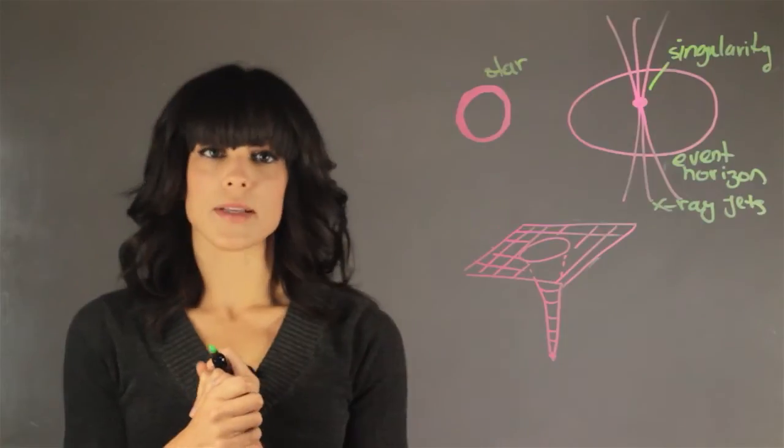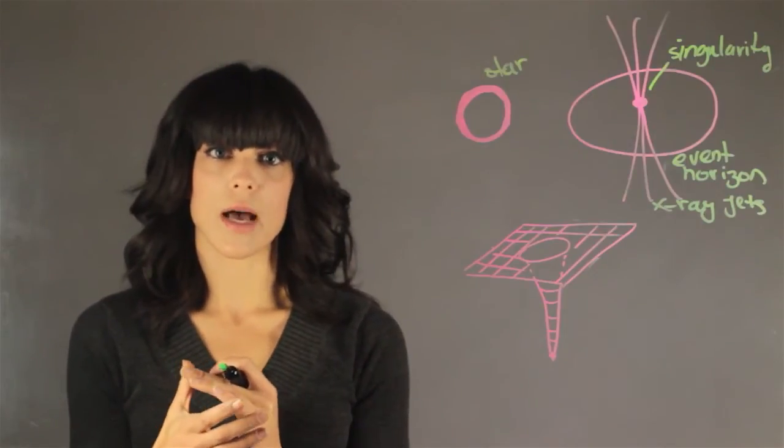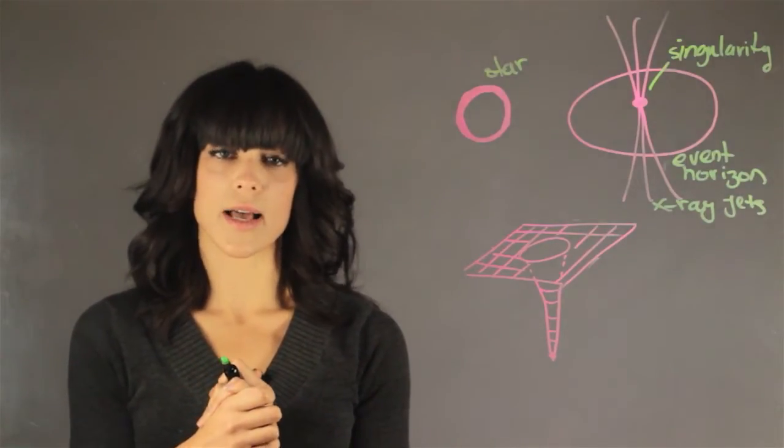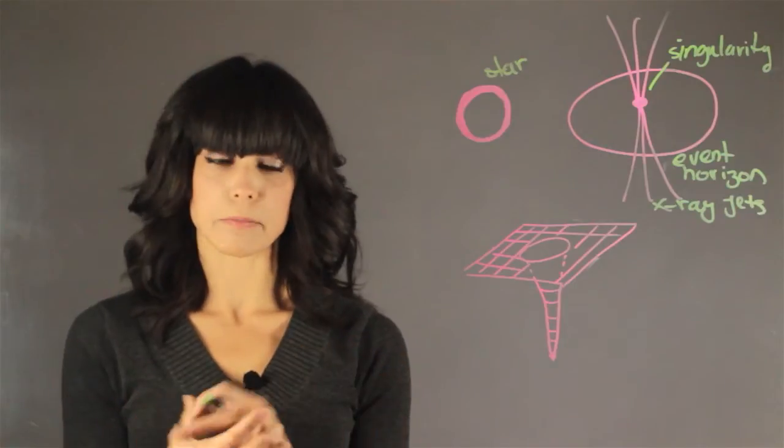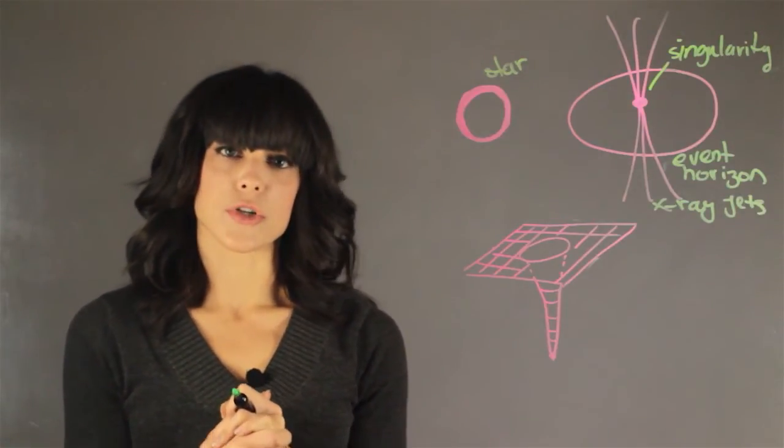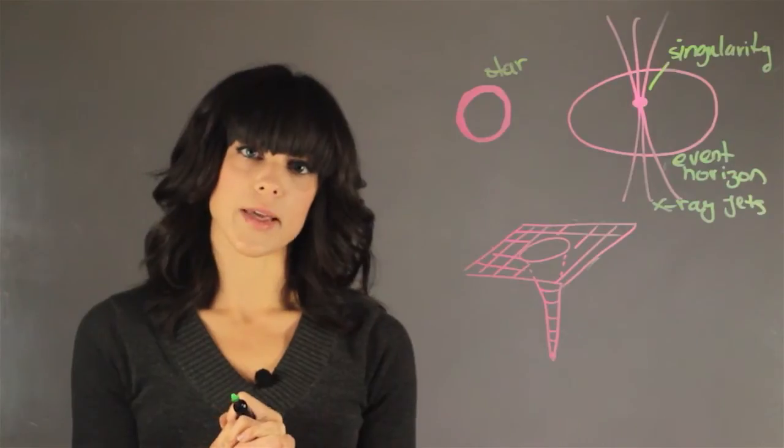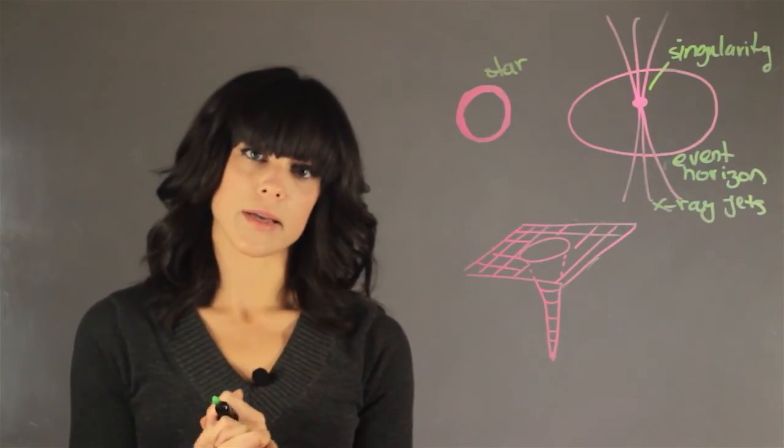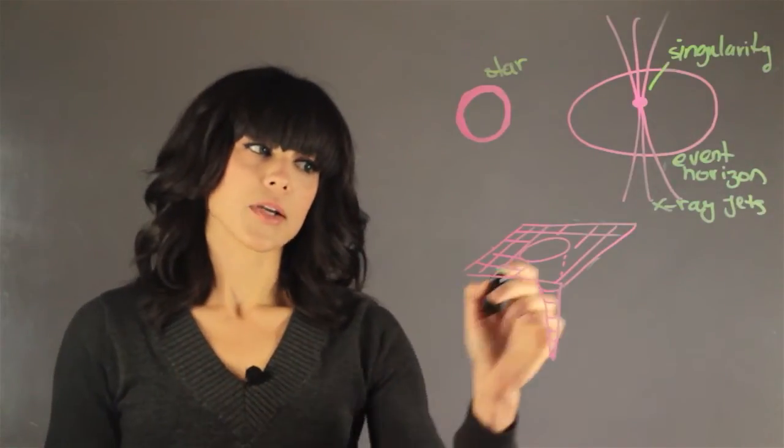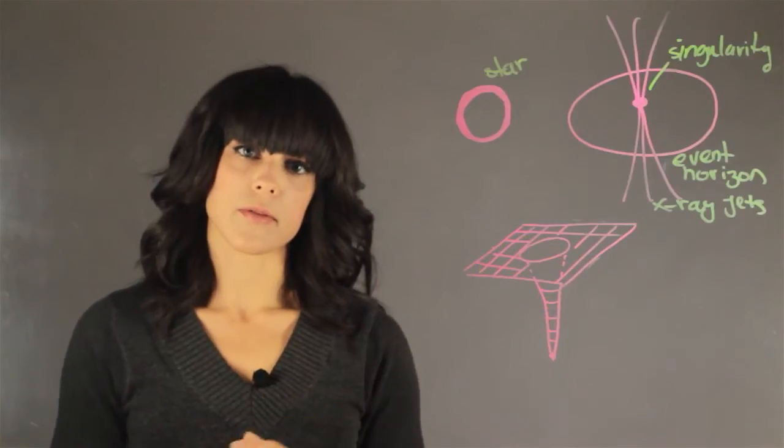And you might ask yourself, how does this happen? How can you get something point-like that has almost infinite density? It happens under such strong gravitational pull that even light can't escape from it. It sucks its own light. You actually deform the fabric of the cosmos.